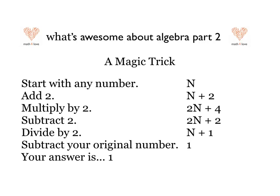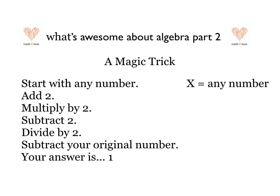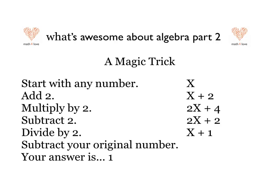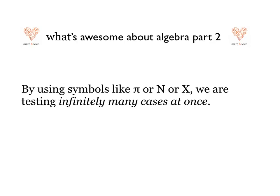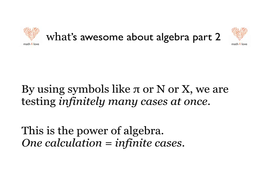Do you see what just happened? By using the symbol instead of actual numbers, we were able to show that this trick works with any number. It doesn't matter what symbol I use — I could use x instead of n. x is very popular in algebra as the thing that stands for any number, and the calculation is exactly the same. It's always 1. We are using symbols like pi or n or x, and by doing that, we're actually testing infinitely many cases at once — doing an infinite amount of work with one calculation.